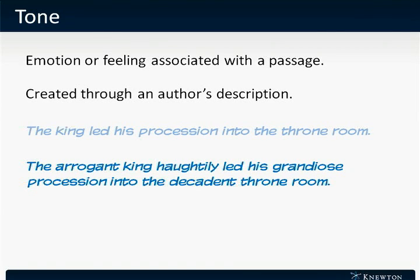The next sentence reads: 'The arrogant king haughtily led his grandiose procession into the decadent throne room.' I've highlighted important tone words here — arrogant, haughtily, grandiose, and decadent — which give a negative, over-the-top connotation to this sentence.